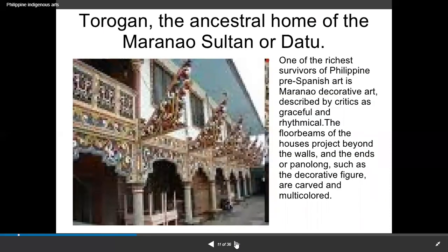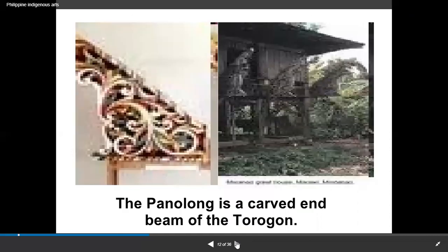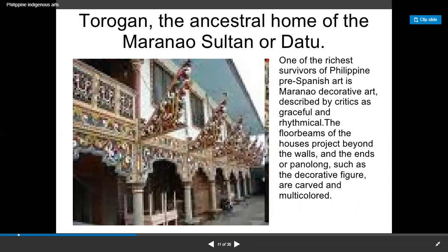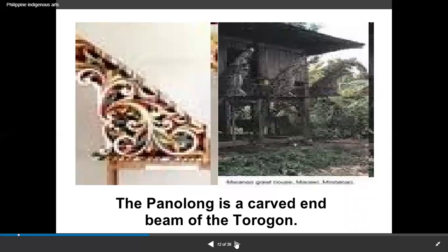Similarly, the Torogan is an ancestral home of the Maranao sultan. One of the richest survivors of pre-Spanish art is Maranao decorative art, described by critics as graceful and rhythmic. The four beams of the house project beyond the walls, and the ends of the Panalong — decorative figures — are carved and multi-colored. The Panalong is a carved beam of the Torogan, which is the ancestral home.